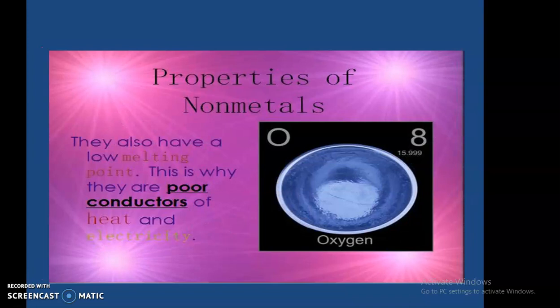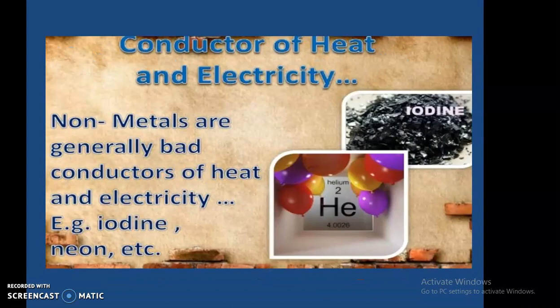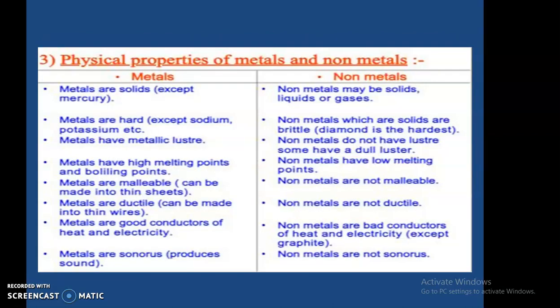Additional properties include low melting and boiling points, and being poor conductors of heat and electricity. Non-metals are generally soft — for example, carbon and phosphorus. Non-metals are generally bad conductors of heat and electricity — for example, iodine and neon.